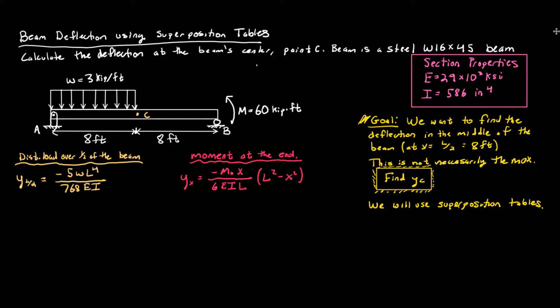In this case, we have a distributed load that is just over half the length of the beam, and it's a constant distributed load — so it's rectangular. We also have a moment applied at the end at point B. The good thing is we have equations in the back of the book that we can use for this, and I've listed them here.